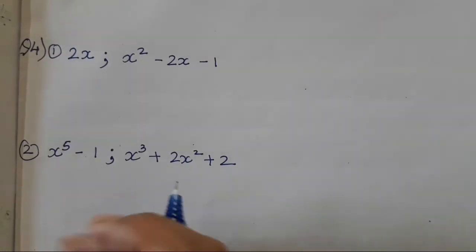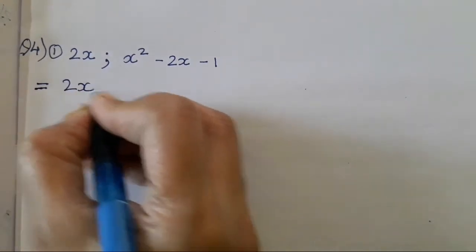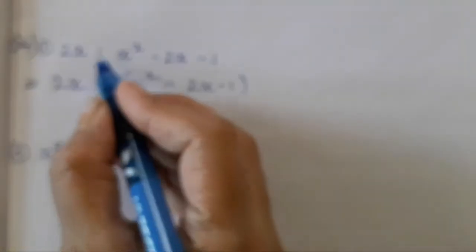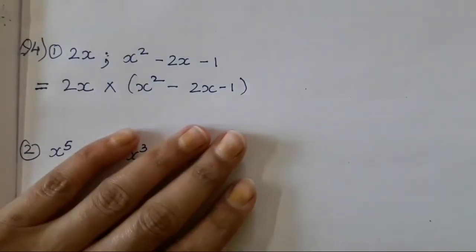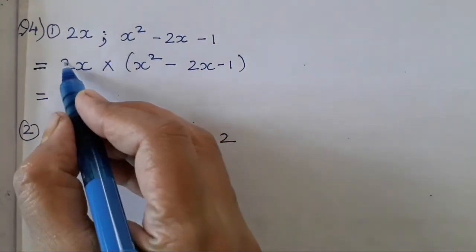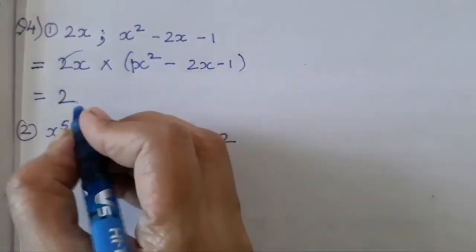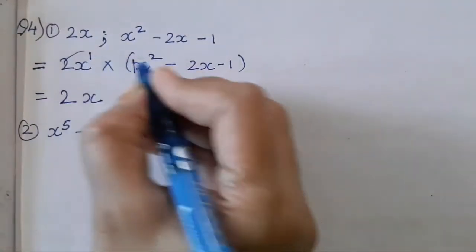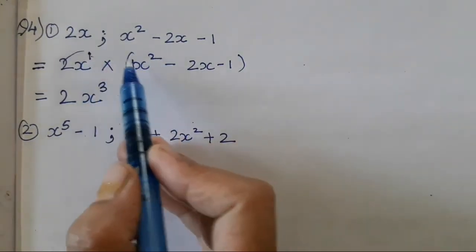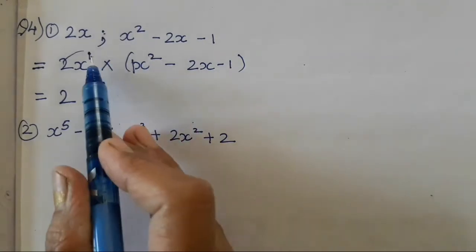Fourth question — you all have to multiply the polynomials. So it is going to be 2x into x squared minus 2x minus 1. Simple multiplication: 2 into 1, so it will be 2, and x into x is going to be x. The terms over here will be added — 1 plus 2 is going to be 3. When there is multiplication, we add the powers.